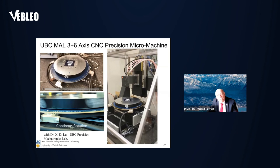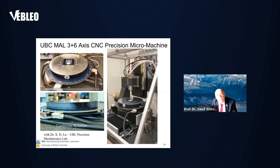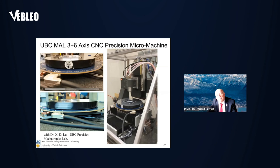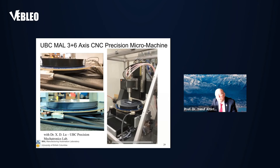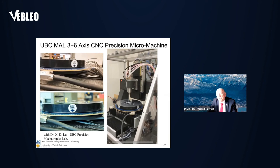The table lifts off the air, it can rotate, move in every direction, and rotate around each axis, like a space shuttle. This is a 3-axis machine with a six-degree of freedom table, so now we have a 9-axis machine.